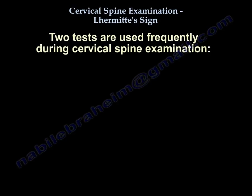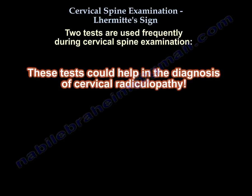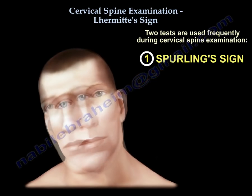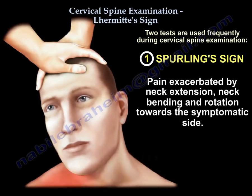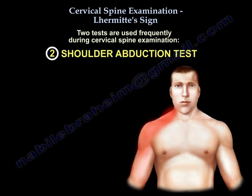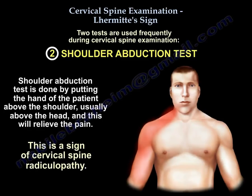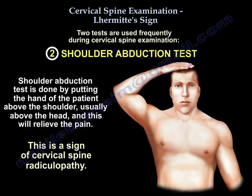Two tests are used frequently during cervical spine examination and could help in the diagnosis of cervical radiculopathy. Number one, the Spurling's sign, which is pain exacerbated by neck extension and neck bending and rotation towards the symptomatic side. The other test is the shoulder abduction test, done by putting the hand of the patient above the shoulders, usually over the head, which will relieve the pain.